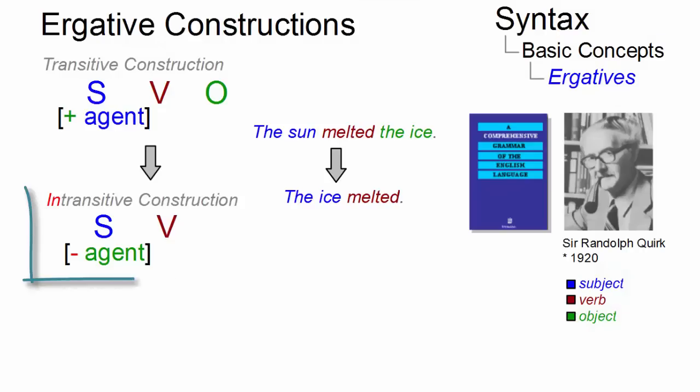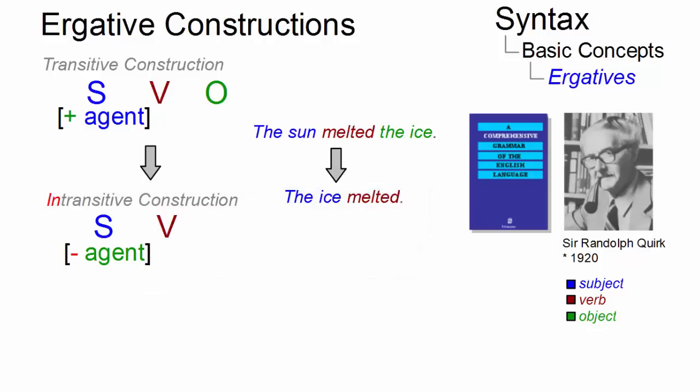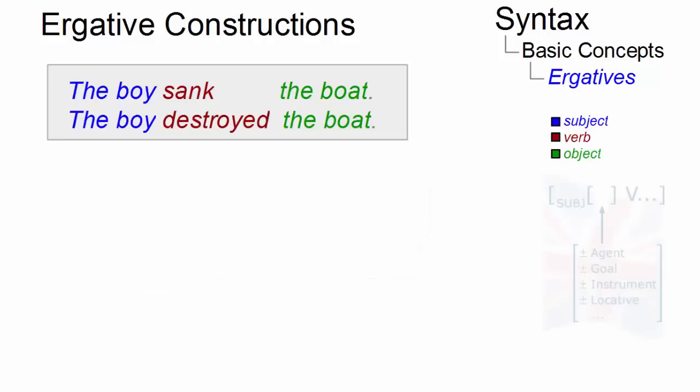Ergatives are intransitive constructions with non-agentive subjects that have an underlying transitive counterpart. Here are two examples that help us understand the difference between ergative and non-ergative verbs in present-day English.